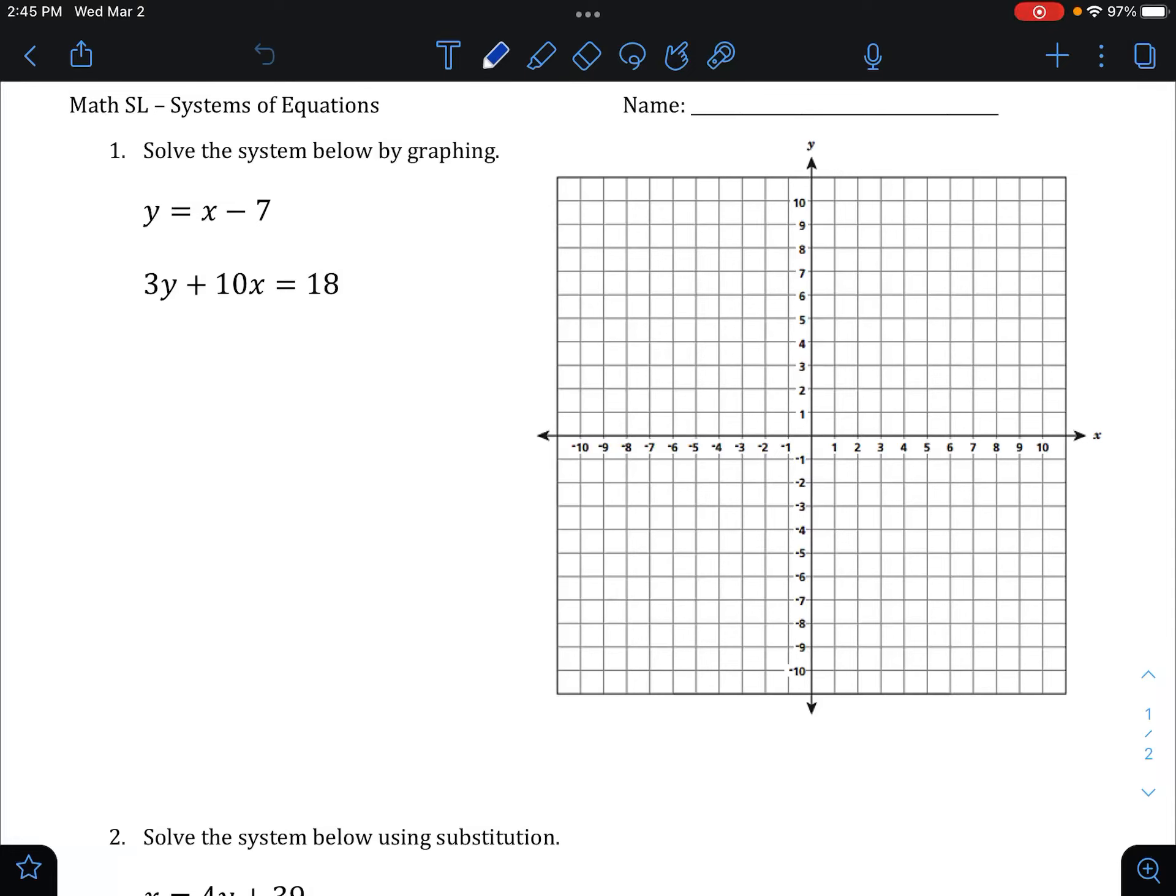Today we're going to look at how to solve a system by graphing and by using substitution. The first one here, we've got y equals x minus 7. So for this one's already in terms of y, because y is by itself, which is what we want. We want to see the y-intercept and the slope, which we do have here because it's y equals.